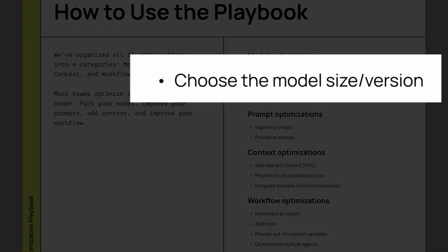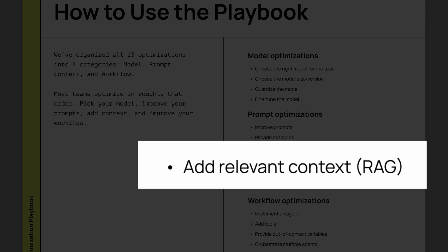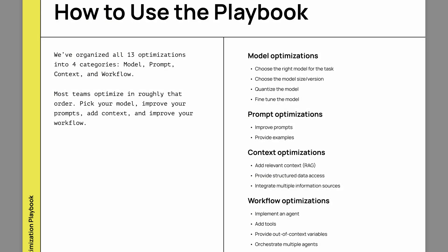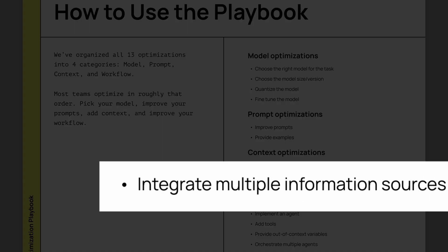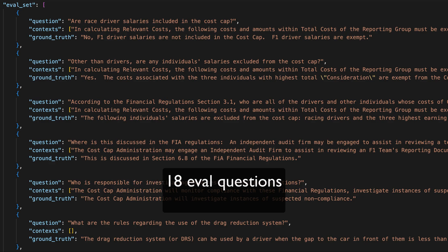We took this Formula One RAG solution and conducted an ablation study based on our LLM optimization playbook. We evaluated four of the 13 optimization techniques on performance: one, choose the model size and version; two, add relevant context or RAG; three, integrate multiple information sources; and four, implement an agent. We created an evaluation framework of 18 questions derived from racing enthusiasts and incident reports, then ran each question three times and evaluated the answers manually or through GPT-4.